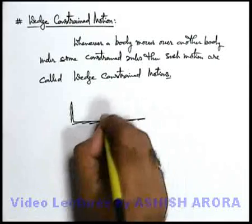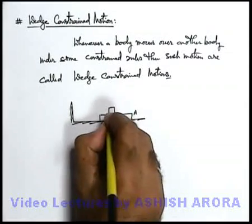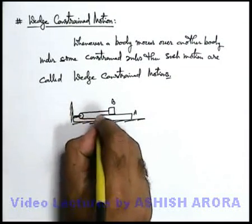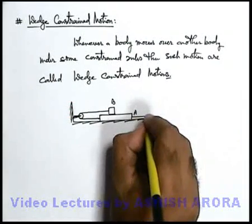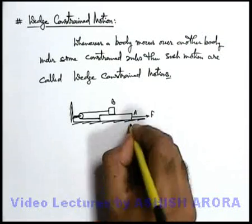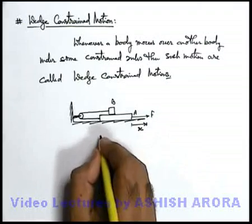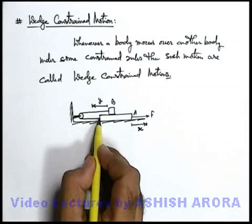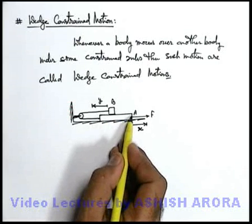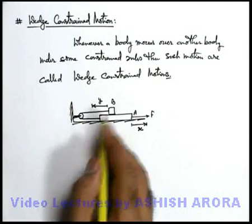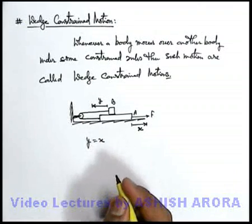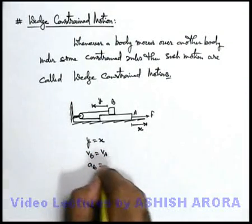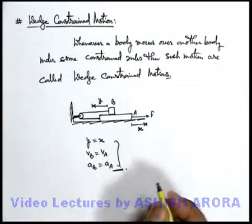On smooth ground, say we have a plank A over which another block B is placed, and they are connected by a pulley which is attached to the side wall. Now say block A is pulled with a force F. We can directly state: if A is displaced toward the right by a distance x, then B will move toward the left by distance y. Since the string is ideal and inextensible, the distance by which A goes toward the right, the same distance B should move toward the left. So here we can say displacement y equals displacement x. Therefore, at every instant, velocity of B equals velocity of A, and acceleration of B equals acceleration of A. These are the constraint relations we develop in such cases.